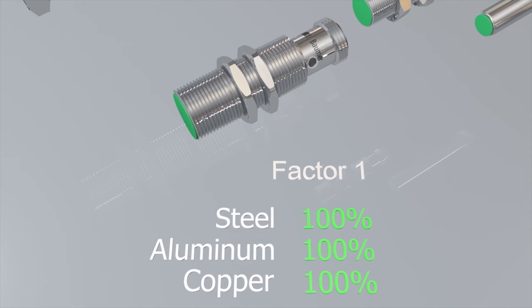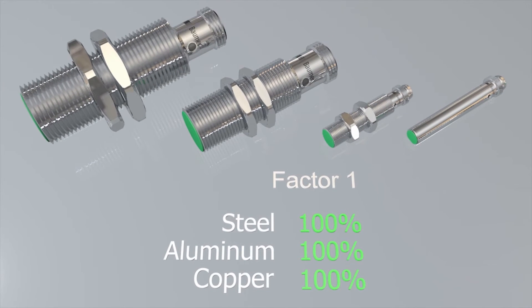The Balmer Factor 1 sensors come in several sizes. The cylindrical design is available with 6, 8, 12 and 18mm in diameter.